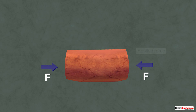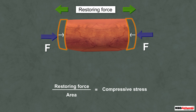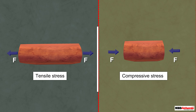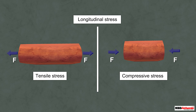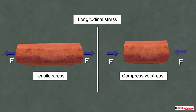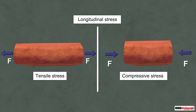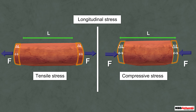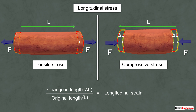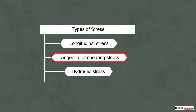Now take another cylinder of clay and compress it from both sides. In this case, the length of the cylinder decreases and the stress is called compressive stress. Tensile stress and compressive stress are together known as longitudinal stress. In both cases, the length of the object changes, and the ratio of the change in length ΔL to the original length L is known as the longitudinal strain.